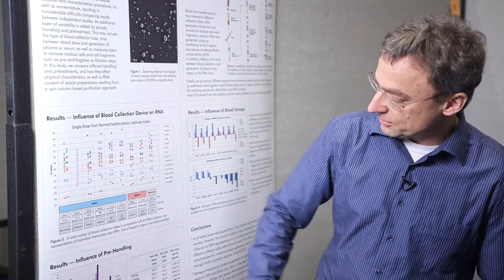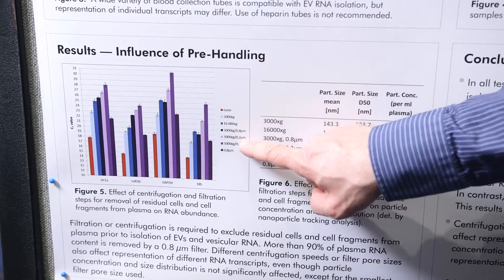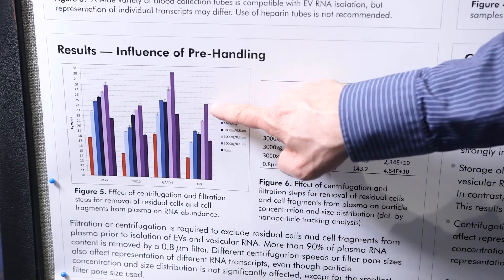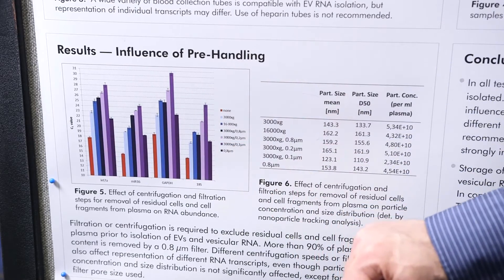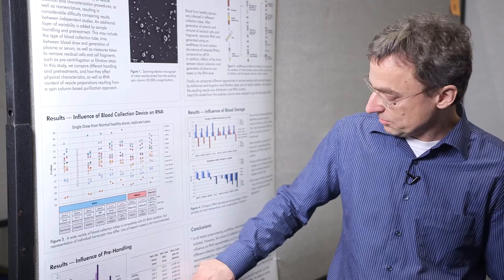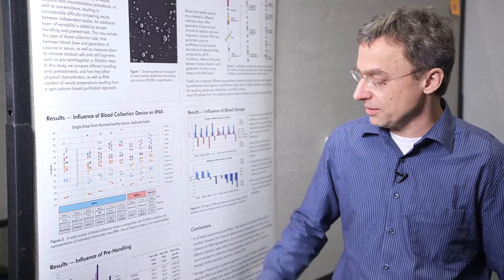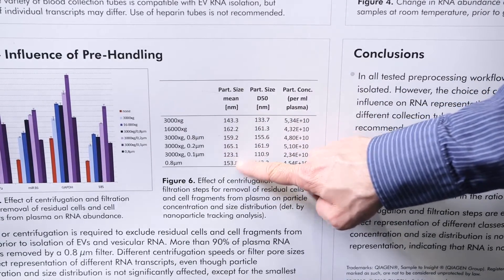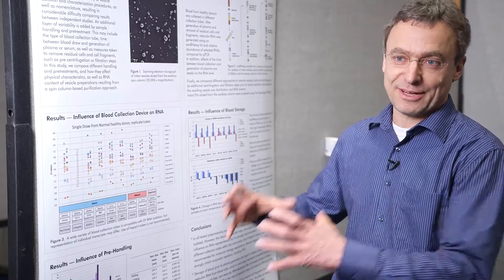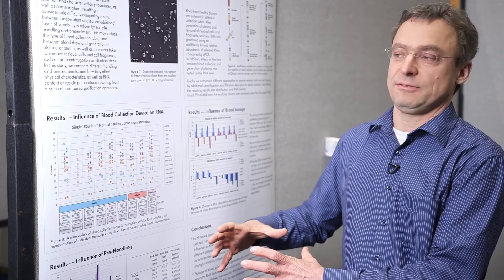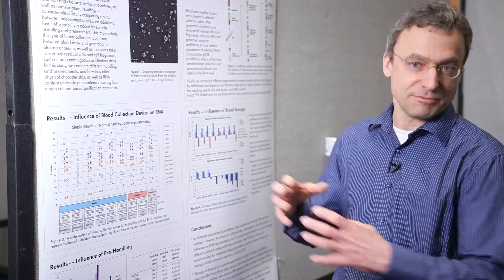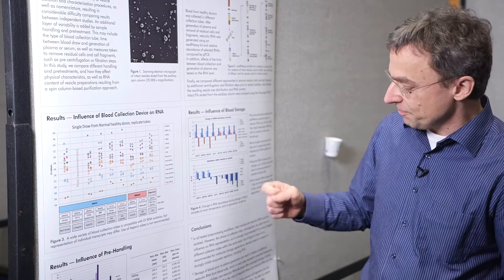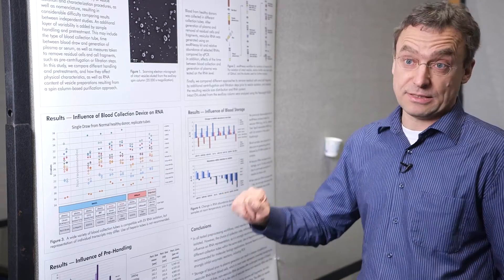With smaller filters, RNA yield continues to decrease. Interestingly, the effect is stronger for large RNAs — GAPDH and 18S decrease by two or three cycles with each pore size reduction, whereas microRNAs decrease somewhat less. This suggests larger RNAs may be preferentially in larger vesicles — perhaps microvesicles — while microRNAs are preferentially in the smaller vesicles. We can also observe an effect on the vesicles themselves.